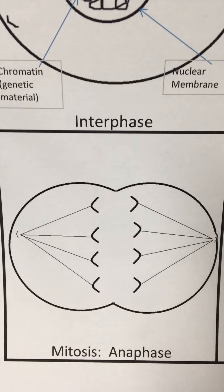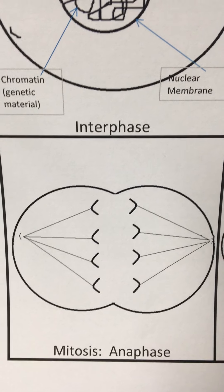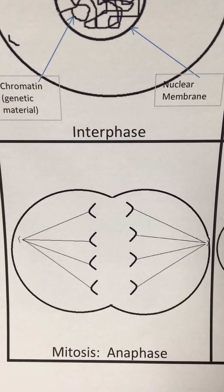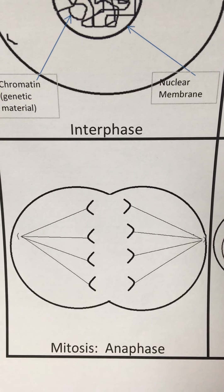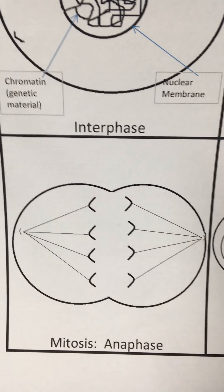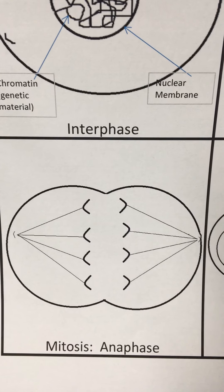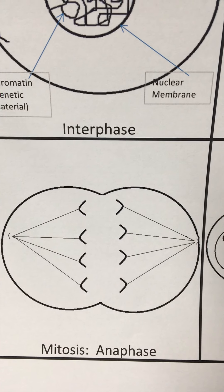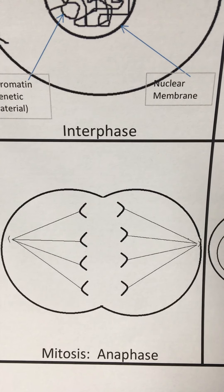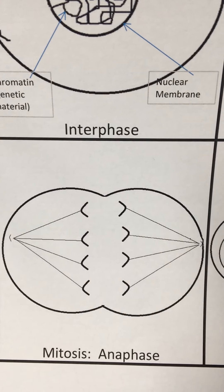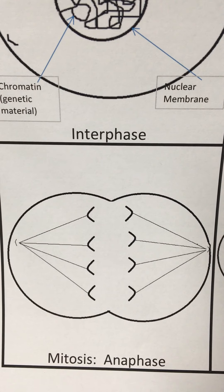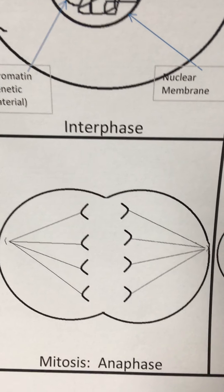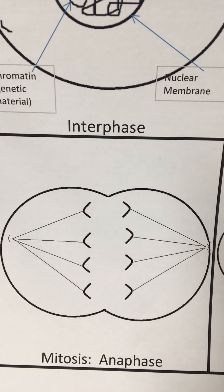During anaphase, the next stage, those spindle fibers attach to the centromeres — the center of the chromosomes — and they have now pulled them apart, pulled them in half, and the chromosomes are being pulled towards opposite ends of the cell.